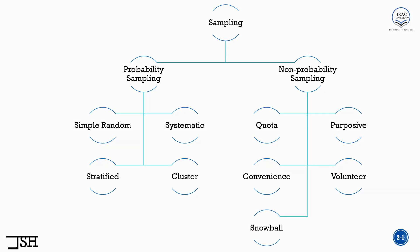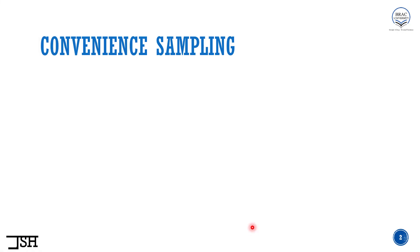Let's start with convenience sampling. All of the concepts of non-probability sampling are very, very easy. Let me give you a small trick here before I start. The actual details or the meaning of the sampling method is hidden in the name. So as soon as you read the name, many of you will be able to understand the true meaning of that sampling method. For example, convenience sampling — as the name suggests, it is something related to convenience. So let's take a look at the definition.